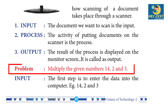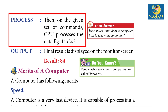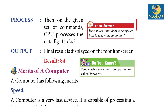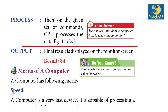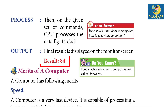Problem: Multiply the given numbers 14, 2, and 3. Input: the first step is to enter the data into the computer — 14, 2, and 3. Process: then, on the given set of commands, the CPU processes the data — 14, 2, and 3. Output: the final result is displayed on the monitor screen; the result is 84.